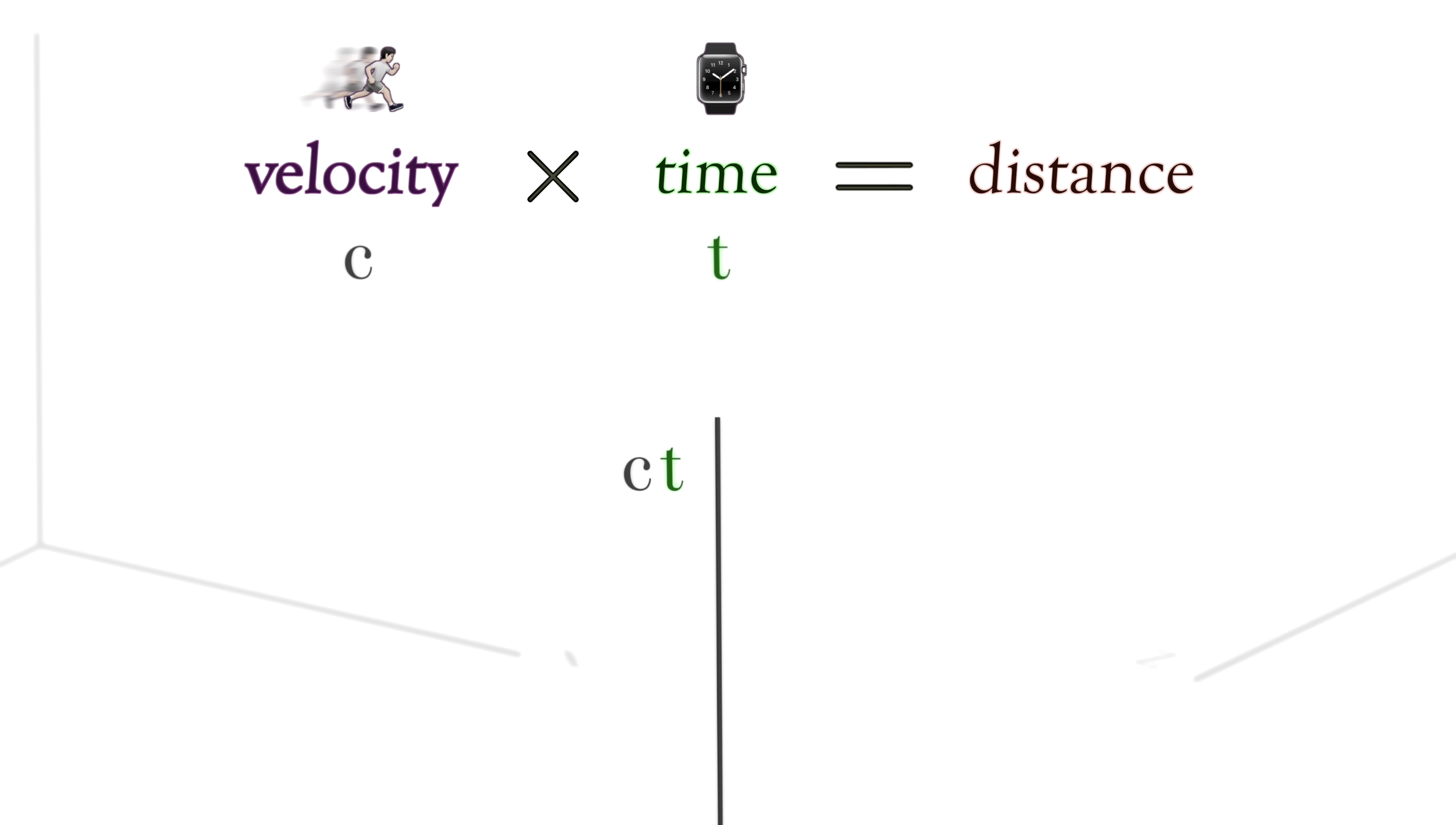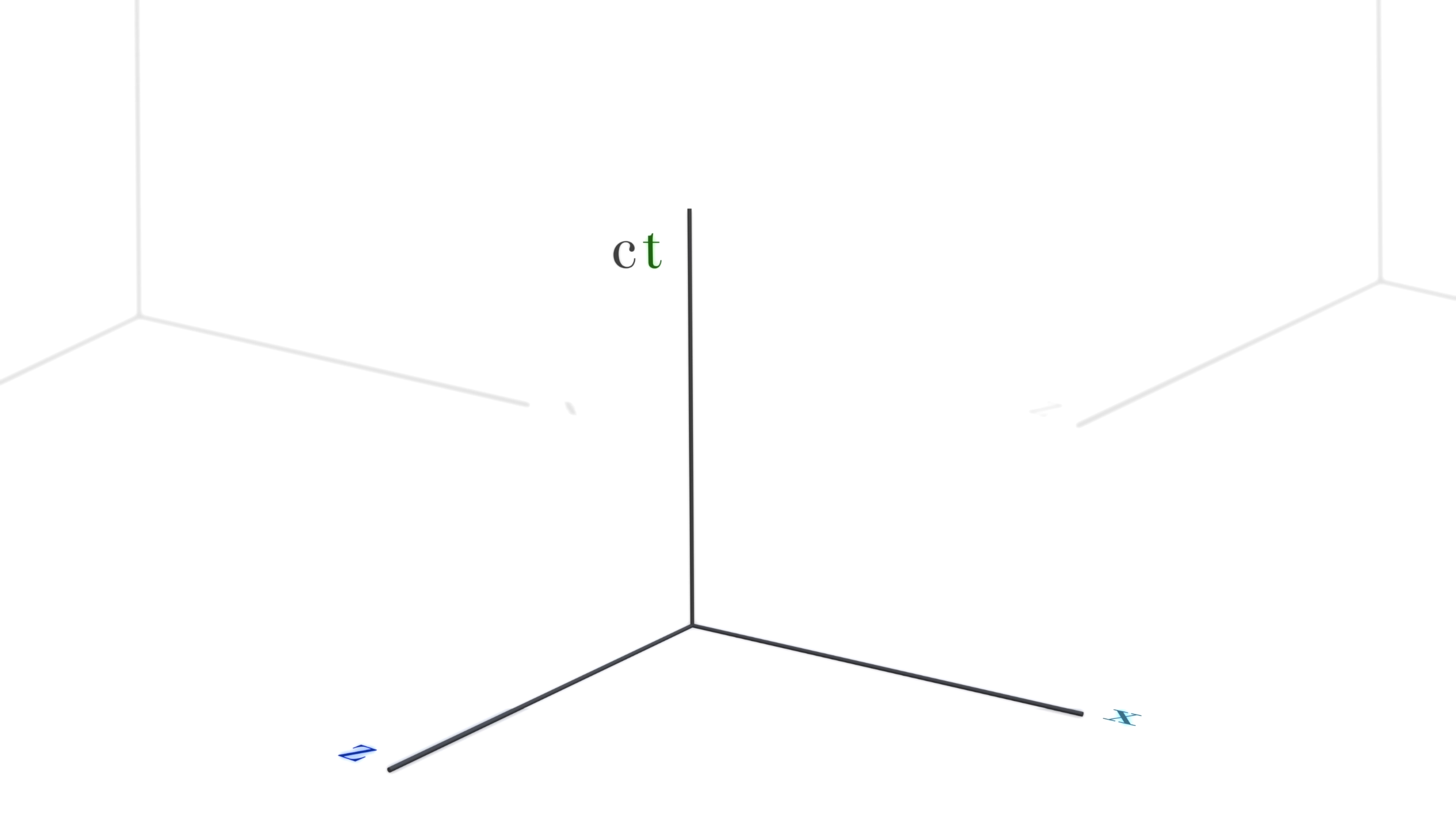Huh, interesting. Now, it's often convention to drop the c from the picture and just label this axis as t.